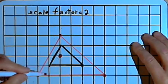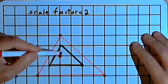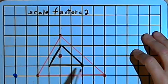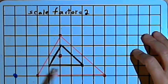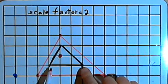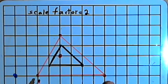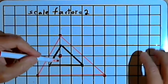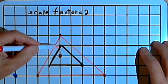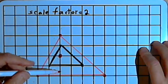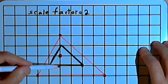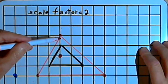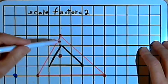So this red triangle is the dilation of the original black one. We can make sure this makes sense. I can look at the length of the base of the original triangle — the base was three units wide. And if I look at the base of the dilated image, it should be twice as wide, and it is — six units. The altitude of the original triangle was two units. The altitude of the new dilated triangle is four units, twice as high. So this makes sense.